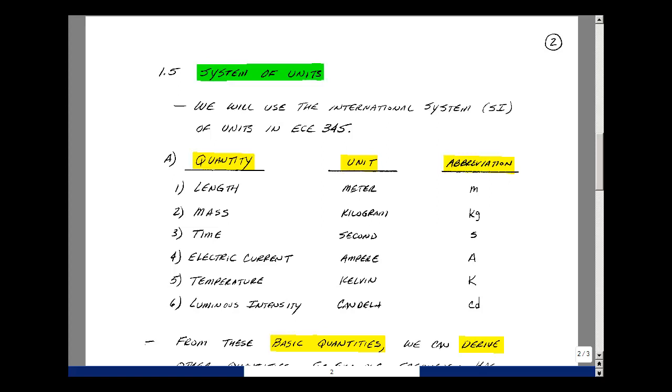The next section deals with a system of units. We'll be using the International System of Units in ECE 345. There are the following six: quantity, unit, and abbreviation. Length in meters, abbreviation small m. Mass in kilograms, or just kg. Time in seconds, just s. Electric current in the unit of ampere, or just the letter capital A. Temperature in Kelvin, capital K. And luminous intensity in candela, or just CD.